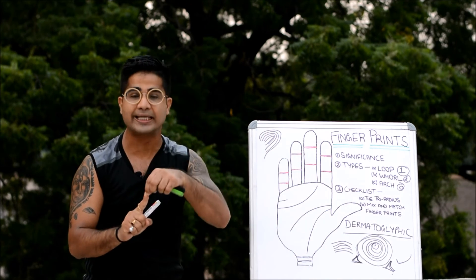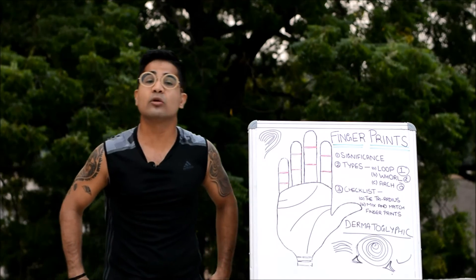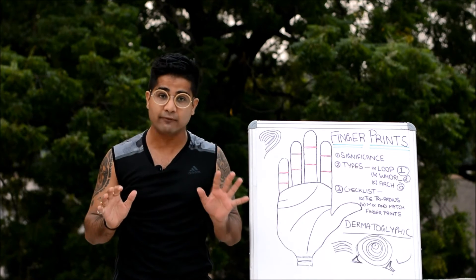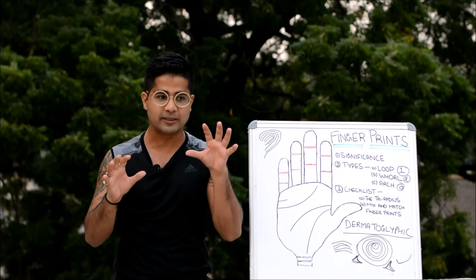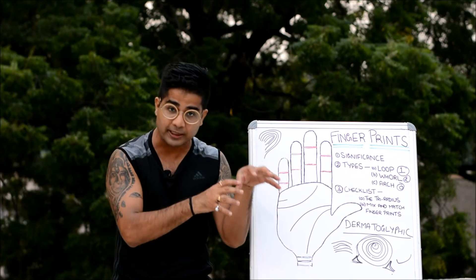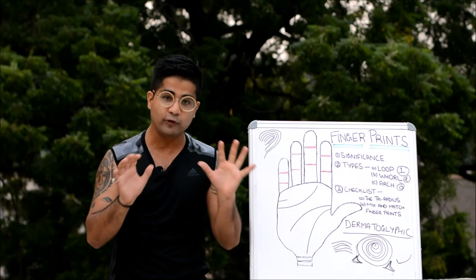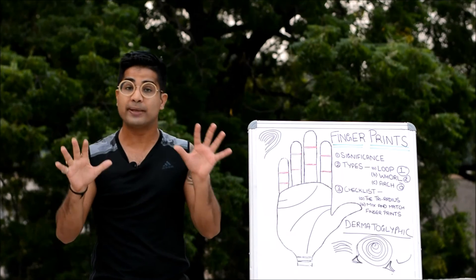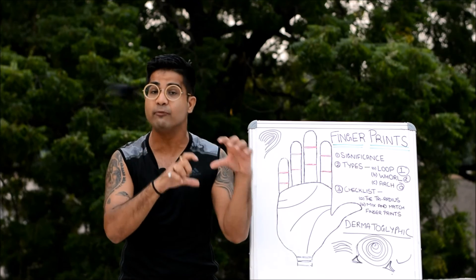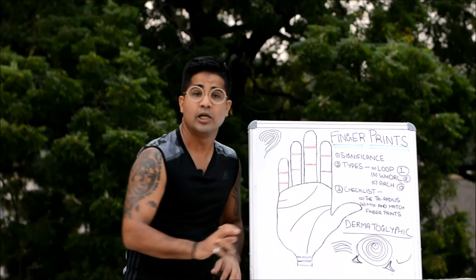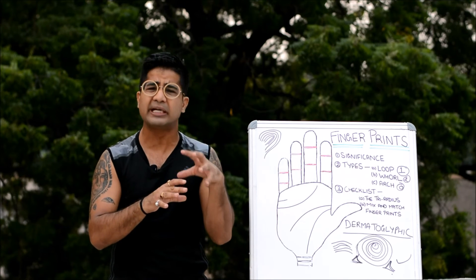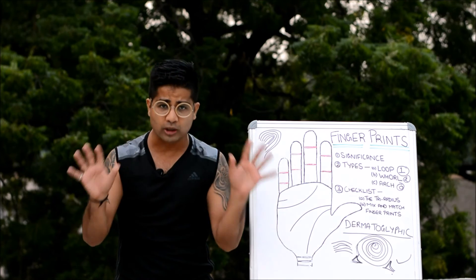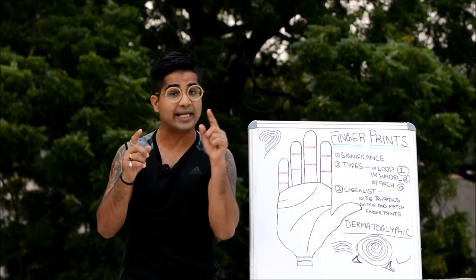The second checklist parameter is mix-and-match fingerprints. You will come across cases where the fingerprint pattern is the same across all ten fingers. In that case, the person is an extreme type of that particular print pattern's qualities. For example, if all ten fingers including the thumb show a whorl pattern, that person will be very individualistic and assertive — an extreme version of whorl signification. This is a rare case, found in roughly ten percent of people worldwide. Most people have a mix of patterns across their fingers.